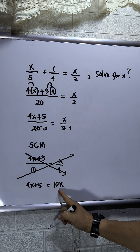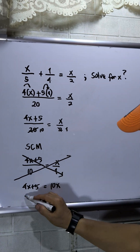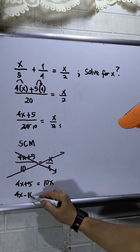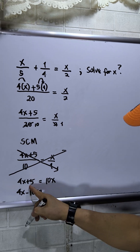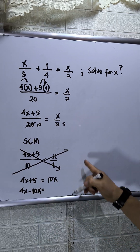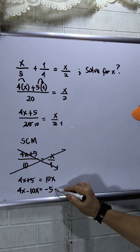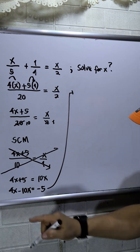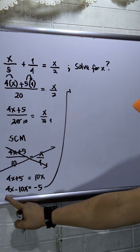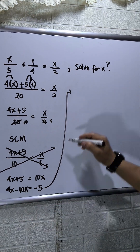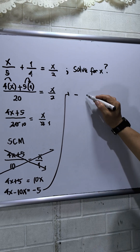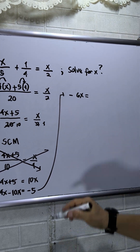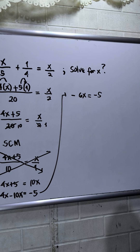So 10x will be transposed to the left: 4x minus 10x is equal to negative 5, transposing 5 to the right. Take note, 10 is bigger than 4, so this becomes negative 6x is equal to negative 5.